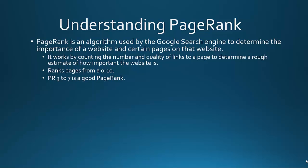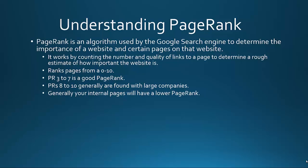PageRanks are from 0 to 10. A PR of 3 to 7 is a good PageRank. You can use the Google toolbar to determine your site's PageRank. A PageRank of 8 to 10 is generally associated with very large companies and very large websites, like eBay, Amazon, Facebook, and Google. Generally, your internal pages will have a lower PageRank.